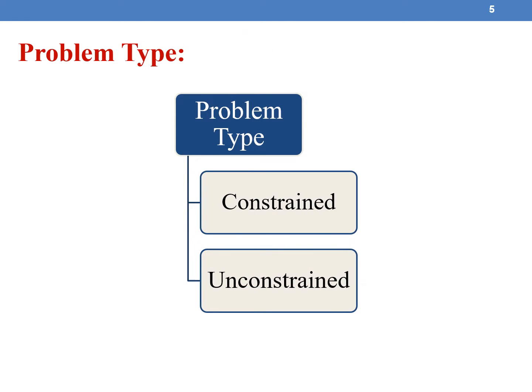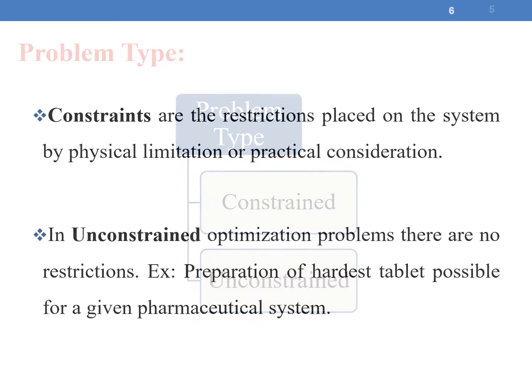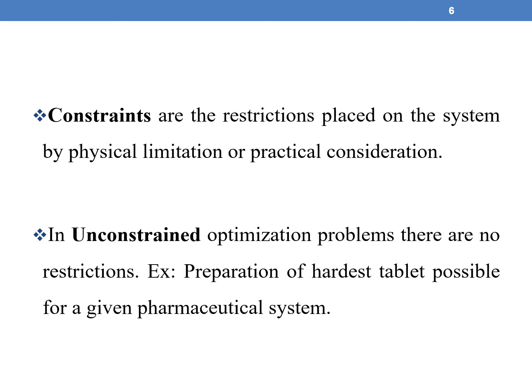Coming to problem type. The problem type optimization parameters are of two types: constrained and unconstrained. Constraints are the restrictions placed on the system by physical limitation or practical consideration. In unconstrained optimization problems, there are no restrictions — for example, preparation of the hardest tablet possible for a given pharmaceutical system.